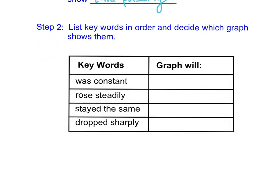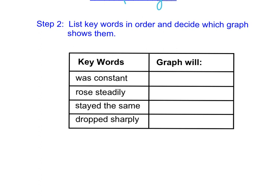So when we have descriptions of graphs, we get these words that we see commonly, and we just want to make sure we understand what they mean. So we have some keywords. We're going to work on listing our keywords in order and decide which graph shows them. On the next slide, I'm going to show you guys some examples.